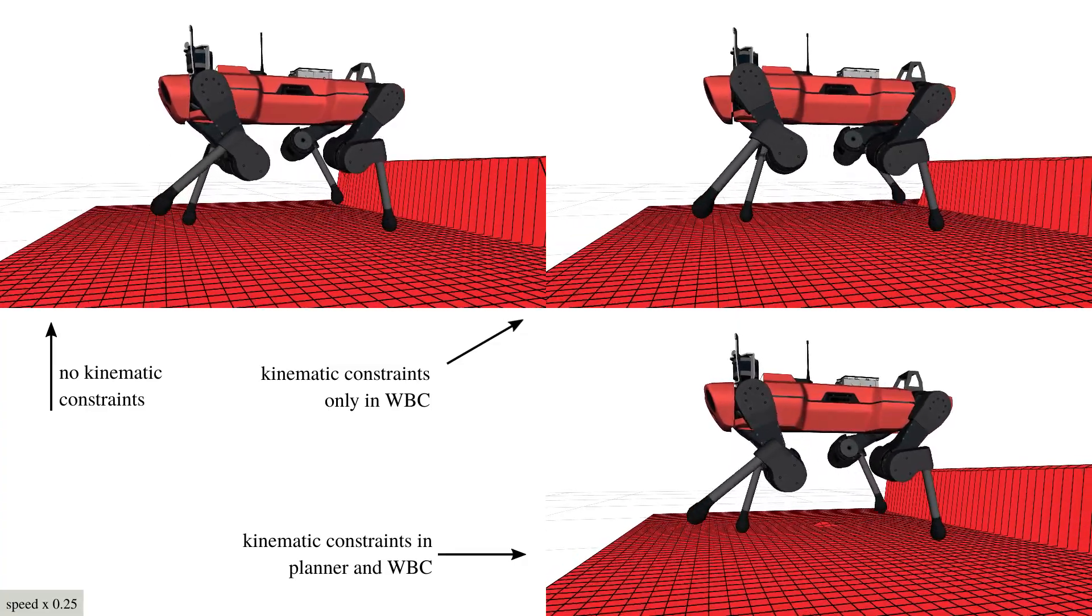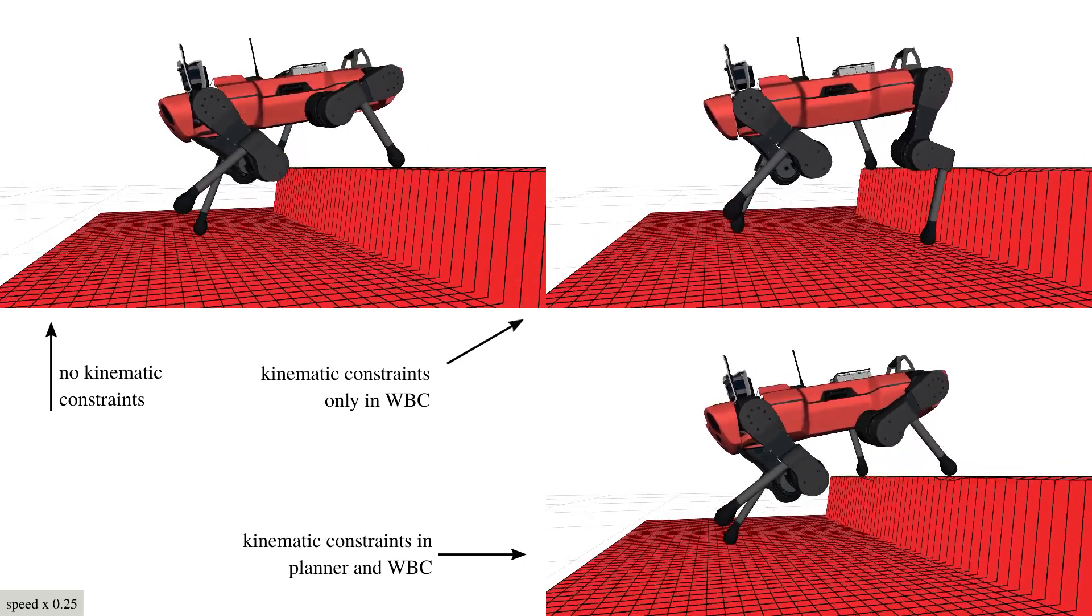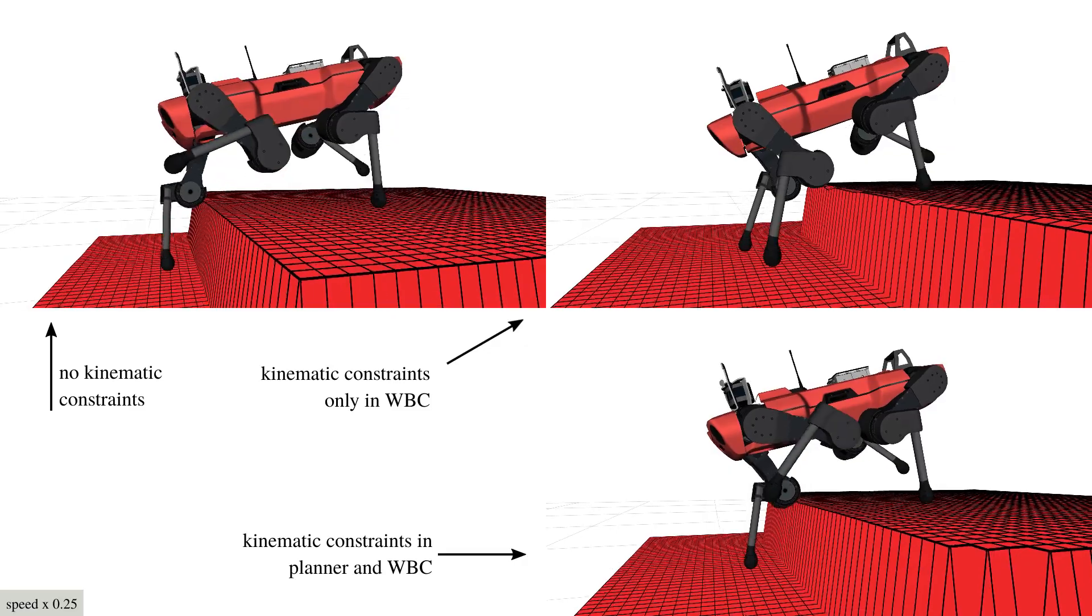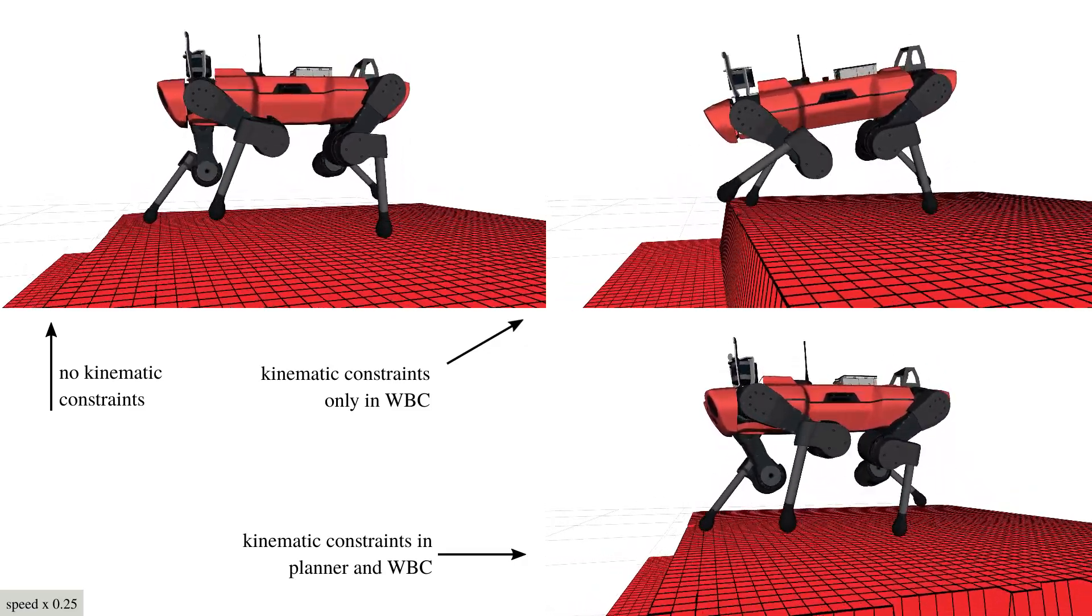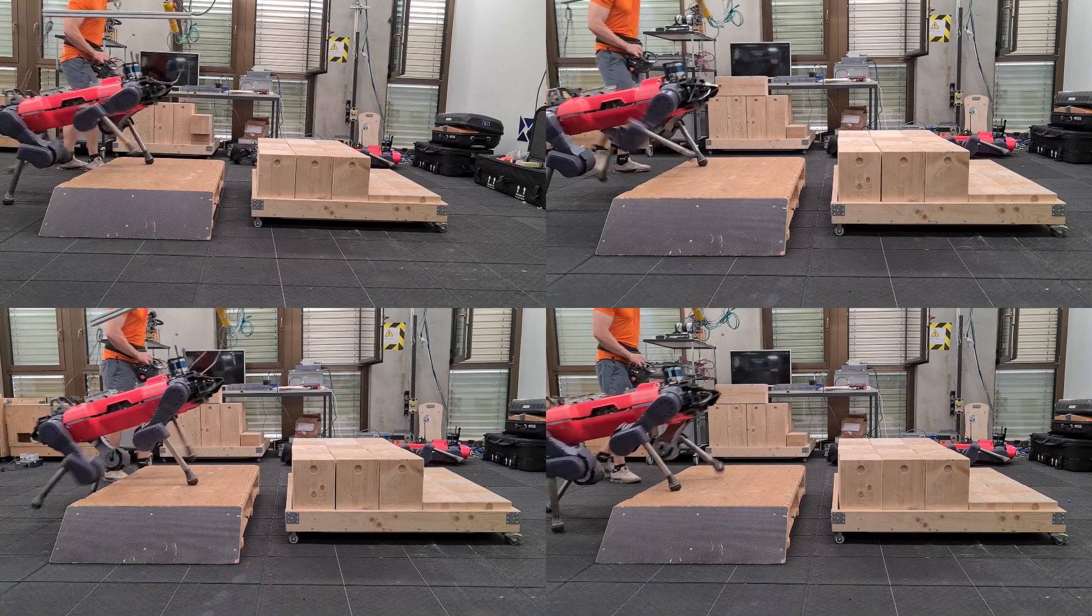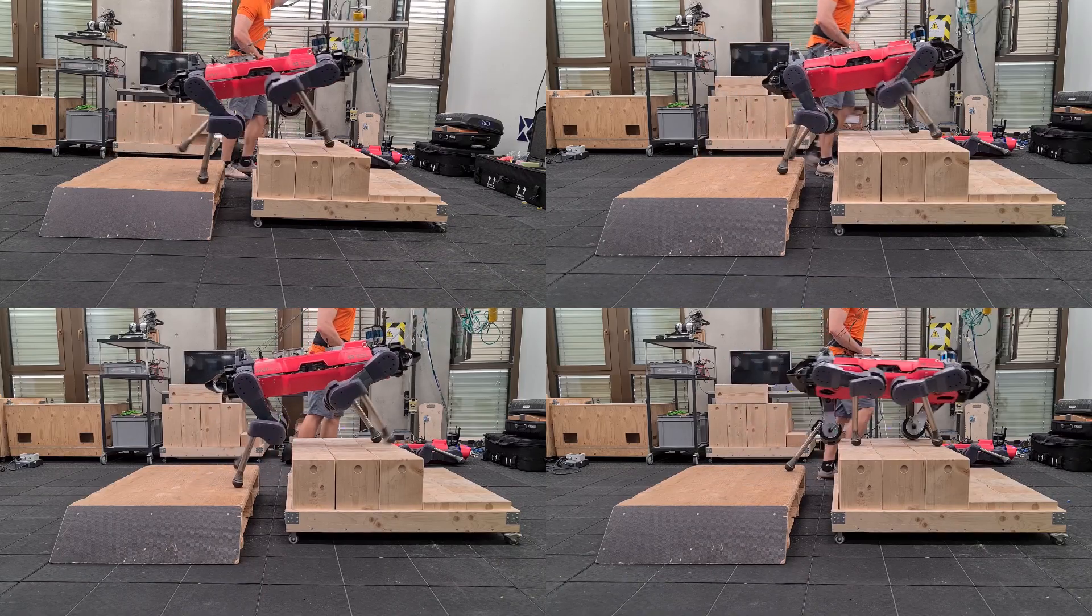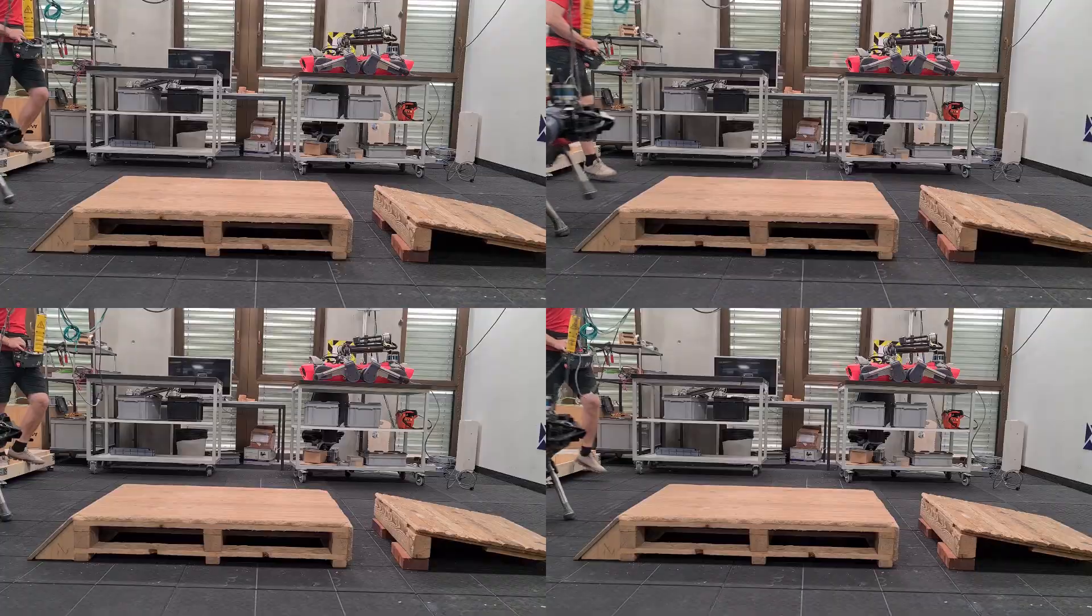Kinematic limits are taken into account in task space by constraining the maximum and minimum limb extension, handling obstacles such as gaps, stepping stones, and stairs.